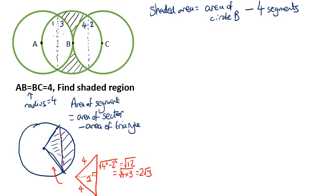The area of the triangle is equal to half the base times the height. The total base going from top to bottom is two times 2√3, which is 4√3. Multiply by the height, which is two. The half and the two cancel, so we get 4√3. That's the area of the triangle.